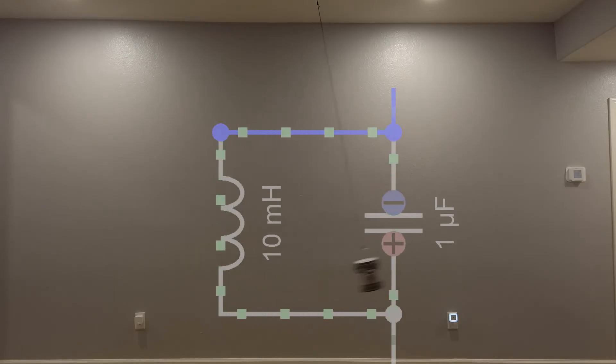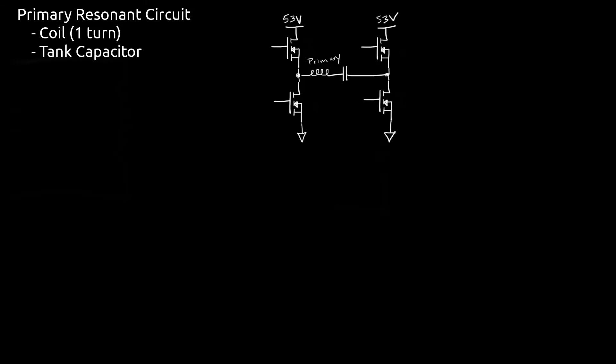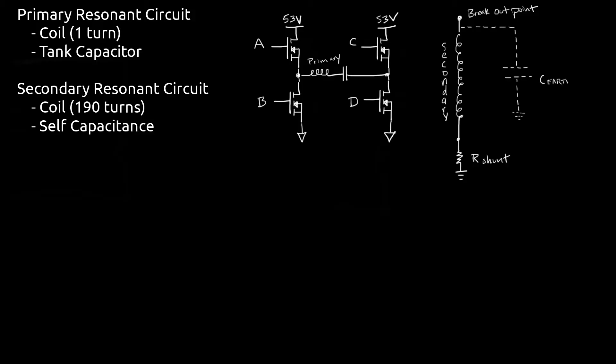Taking these concepts let's build up a block diagram for how one could create a system capable of generating tens to hundreds of thousands of volts or even more. Breaking this down into functional blocks, there is a primary resonance circuit comprised of a single turn coil and a series tank capacitor. The secondary resonance circuit is comprised of two 190 turn coils connected in series and the capacitance comes from the coils self capacitance and capacitance to earth and the surroundings. A flyback boost converter is used to step up the 5 volt USB voltage to approximately 53 volts.